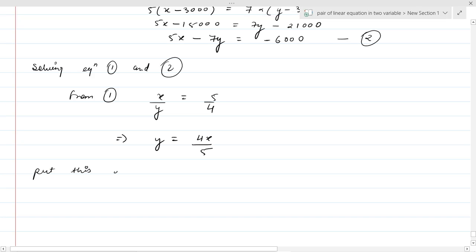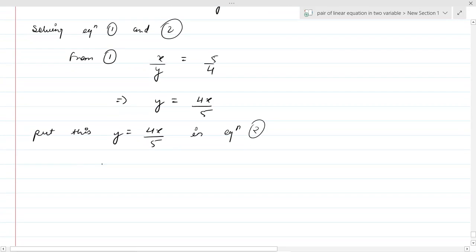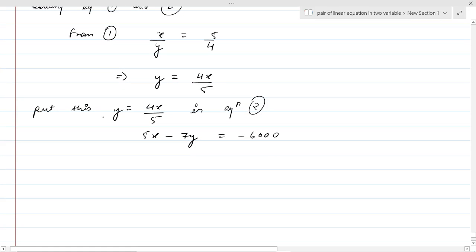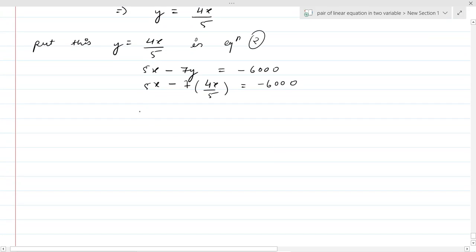Put Y equal to 4X upon 5 in equation second. Equation second is 5X minus 7Y equal to minus 6000. So 5X minus 7 into 4X upon 5 equal to minus 6000. So this is 5X minus 28X upon 5 equal to minus 6000.